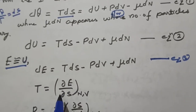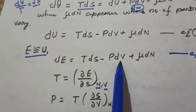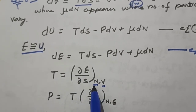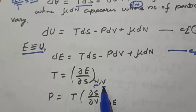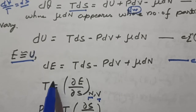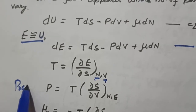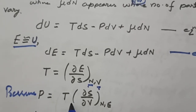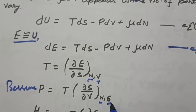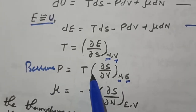By keeping N and V constant, from equation 3, the definition of temperature comes out as T equals dE upon dS, keeping N and V constant. Those terms become zero, giving T equals dE upon dS. Similarly, pressure is defined as P equals T times of dS upon dV, keeping N and E constant.